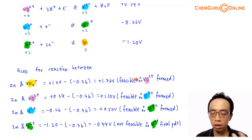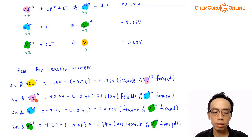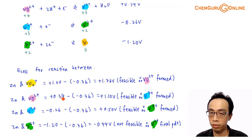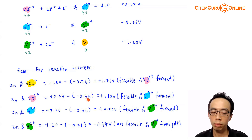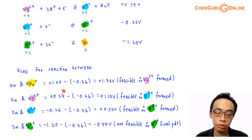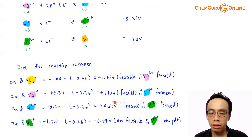We continue to check whether zinc can reduce VO2+ even further. For zinc reacting with VO2+(+4): E-cell = +0.34 V − (−0.76 V) = +1.10 V. This is another positive value, so this reaction is also feasible — zinc is capable of reducing vanadium from +4 to a +3 oxidation state.